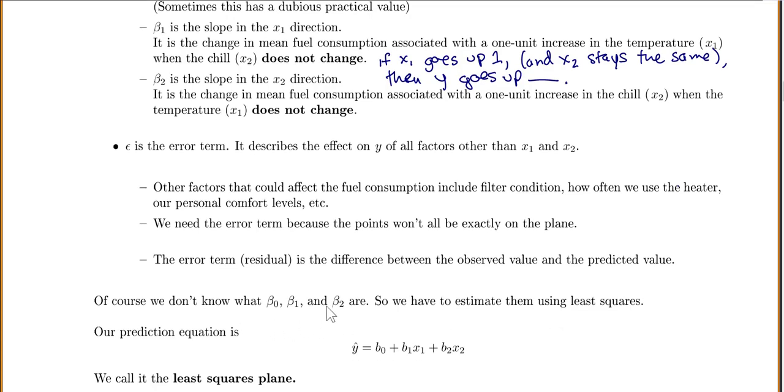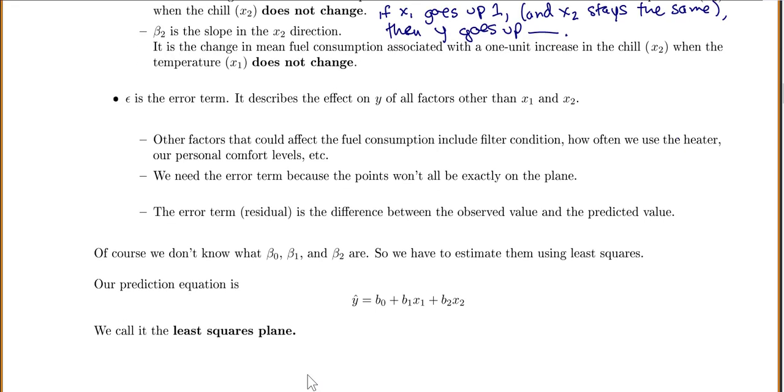Now, of course, we don't know what our population parameters are, so we have to estimate them using least squares again. Our prediction equation, we just say y hat, is a little b, because it's for our sample. So b0 plus b1x1 plus b2x2. That's our least squares plane.